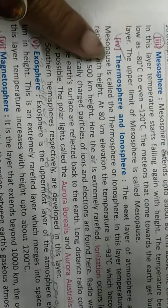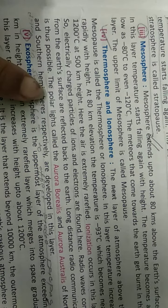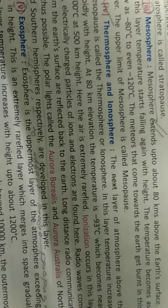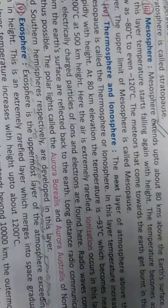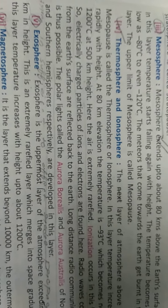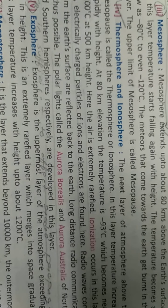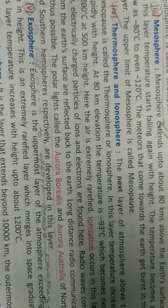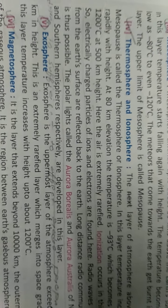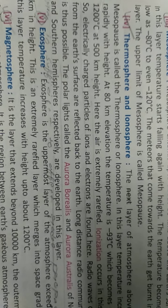After the mesosphere comes the thermosphere. In this layer, the temperature increases rapidly as the height increases. Above 80 kilometers altitude, the temperature increases from minus 93 degrees centigrade, which becomes nearly 1000 degrees centigrade at 500 kilometers height. The air is extremely rarefied here. Ionization occurs in this layer — that means electrically charged particles, ions and electrons, are found here. So this layer is also known as the ionosphere.